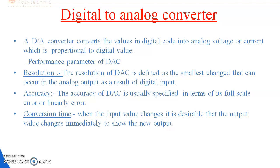The second parameter is accuracy. The accuracy of a DAC is usually specified in terms of full-scale error or linearity error. The third parameter is conversion time. When the input value changes, it is desirable that the output value changes immediately to show the new output. These are the performance parameters of DAC.